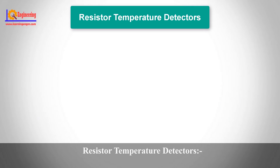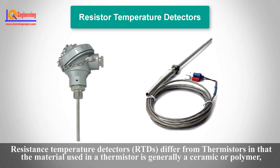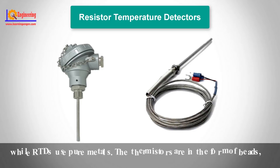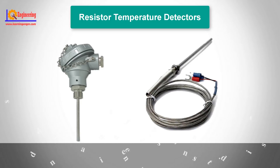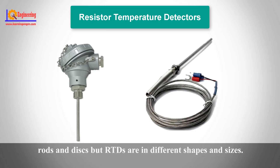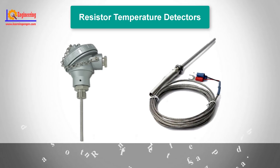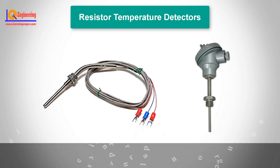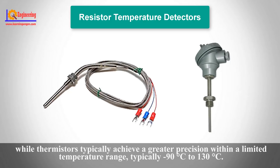Resistance Temperature Detectors differ from thermistors in that the material used in a thermistor is generally a ceramic or polymer, while RTDs use pure metals. Thermistors come in the form of beads, rods, and discs, but RTDs are available in different shapes and sizes. The temperature response is also different — RTDs are useful over larger temperature ranges, while thermistors typically achieve greater precision within a limited temperature range.